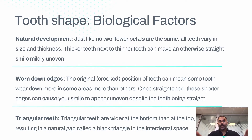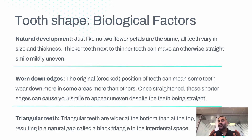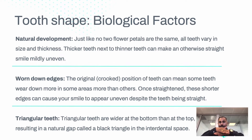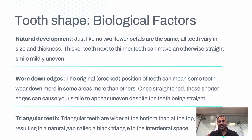The other factor is worn-down edges. When teeth were in an original position and then move into a new position, they can appear uneven even though they're in the right position — because the tooth has a chipped edge. The third factor is triangular teeth: when teeth are overlapping they are generally triangular shaped, so when we uncross them we naturally notice a little space between them even though the teeth are fully touching.